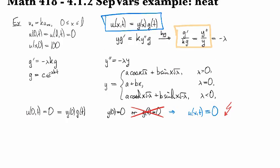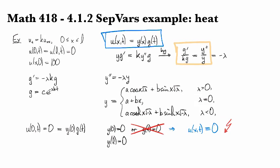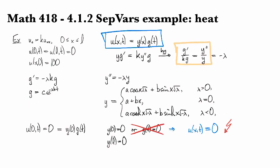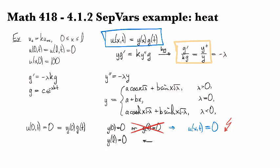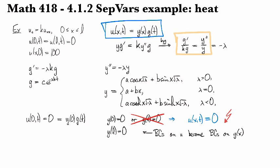And so in the same way, we also find that y of l is equal to zero. And so the moral of this story is that boundary conditions on u become boundary conditions on the function of the spatial variable.